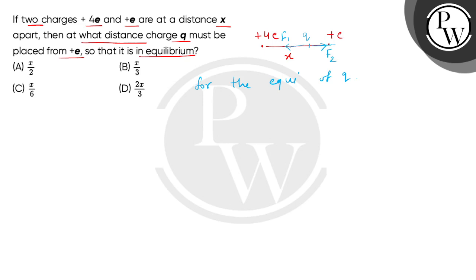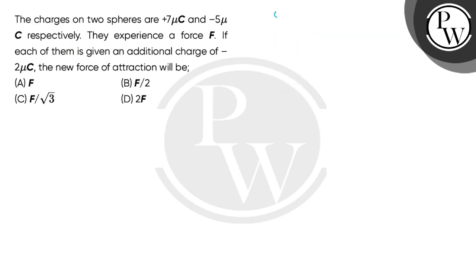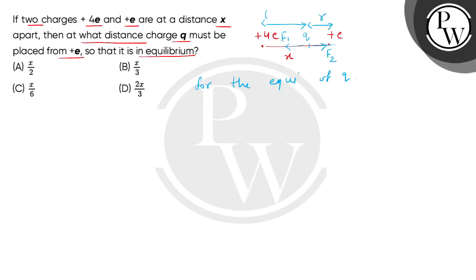If we consider distance from q to e as distance r, then this distance is x minus r.